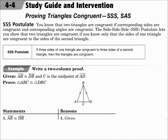This is Lesson 4.4, Proving Triangles Congruent: Side-Side-Side and Side-Angle-Side. In addition to being able to show triangles are congruent with all three pairs of sides and all three pairs of angles, you can take some shortcuts. If you know the three pairs of sides are congruent, that's enough to say that the triangles are congruent, and that rule is called the SSS Postulate.